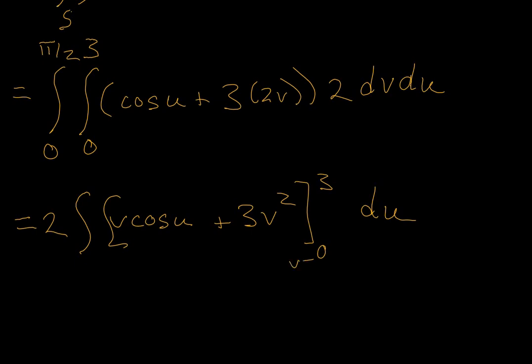When v equals 0, we get 0's for both terms, and when v is 3, I believe we're going to get 2 times the integral, 0 to pi over 2, 3 cosine u plus 27.